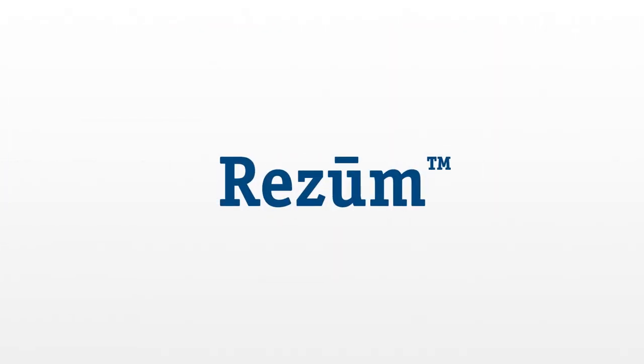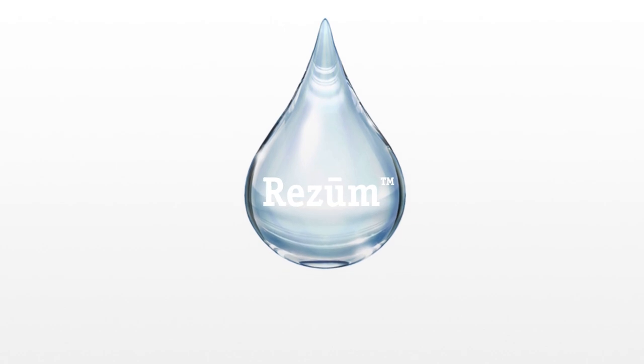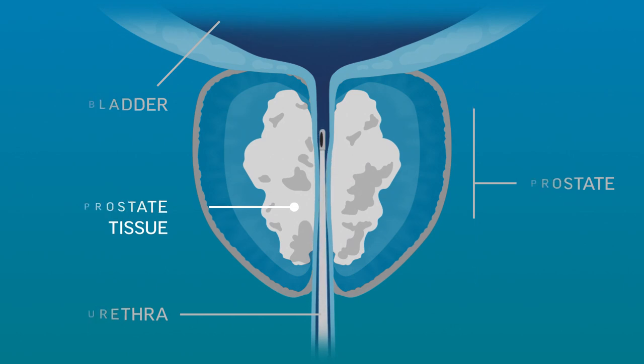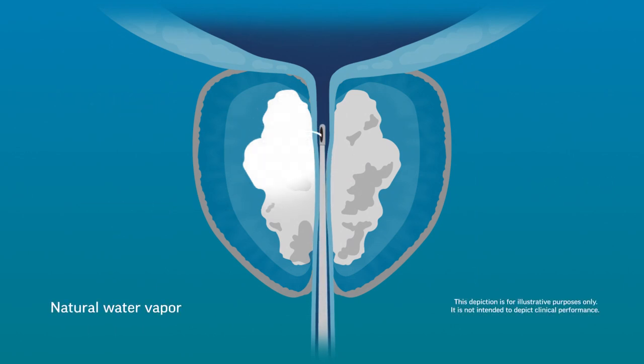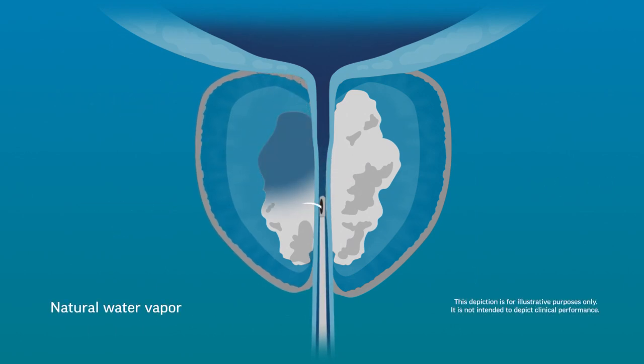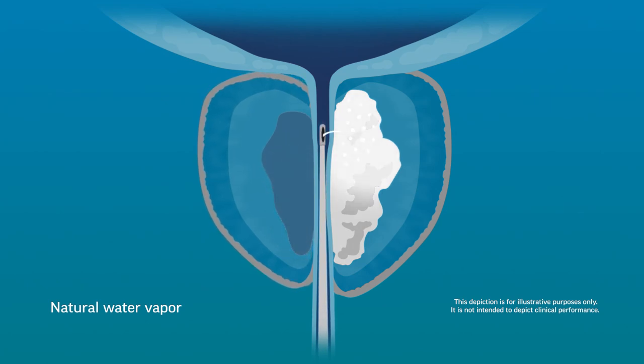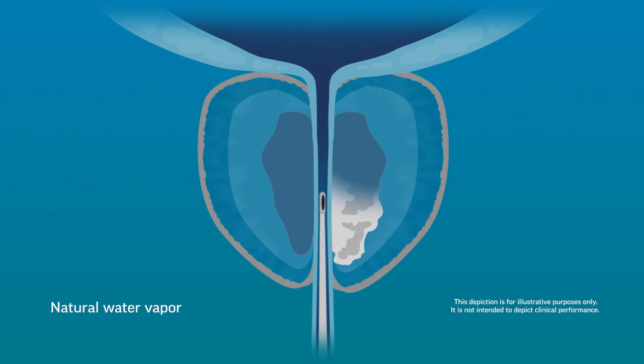Rezum water vapor therapy is a non-surgical treatment for BPH. Rezum uses the natural energy found in steam to shrink the prostate. In just seconds, this precise technology destroys enlarged prostate tissue while minimizing any effect on surrounding tissue.